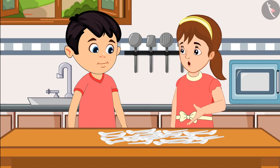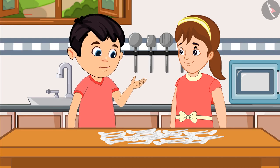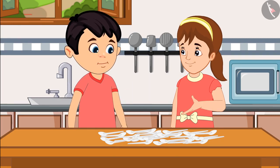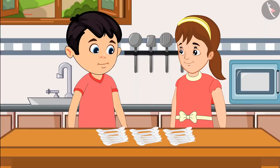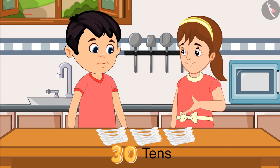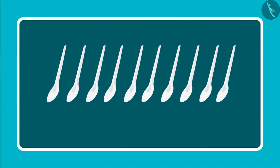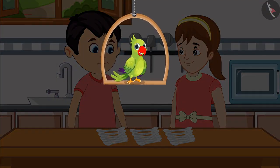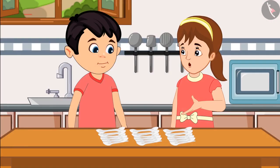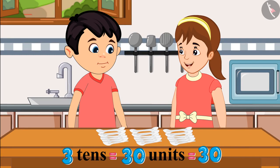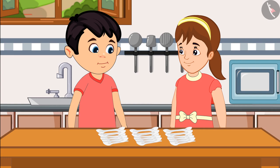They decide to count again by dividing the spoons into groups of 10. Choto groups them: 10, 10, 10, and another 10 — 'a total of 30 tens.' Auntie corrects him: 'Choto, you are counting it wrong. A group of 10 means one 10.' Children, Choto has not bought 30 sets of 10 spoons — these are just 30 spoons. 30 does not mean 30 tens, but 30 units. Choto says: 'Now I have understood, you are right.'